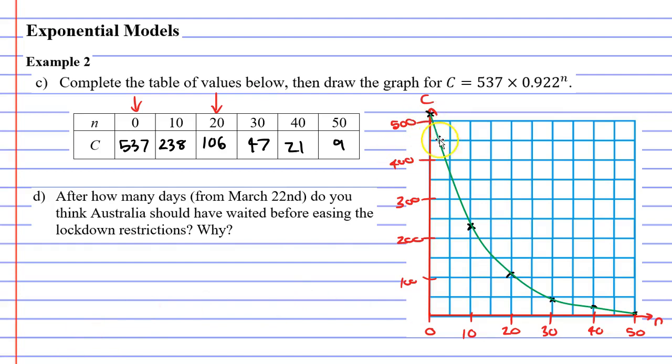And when you're finished, you should have an exponential decay curve, like the one I've got here. Now, moving on to question D. After how many days from March 22nd, do you think Australia should have waited before easing the lockdown restrictions, and why?